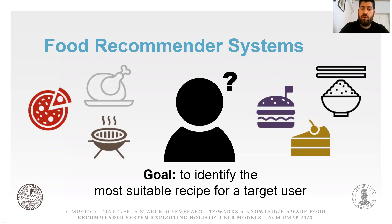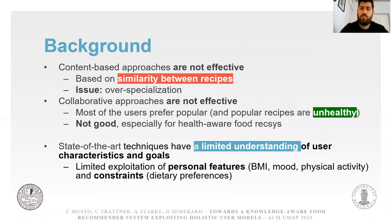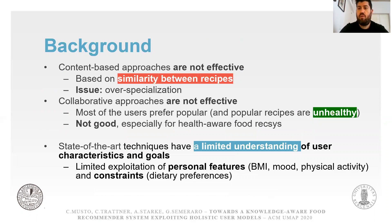The goal of this technology is very intuitive because they basically aim to identify the most suitable recipe for a target user, given some characteristics of the user or some constraints. Currently, the literature in the area of food recommender systems has three main issues. First, content-based approaches are not effective, because they are typically based on similarity between ingredients, so they tend to suffer from over-specialization.